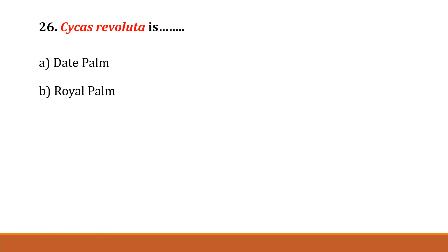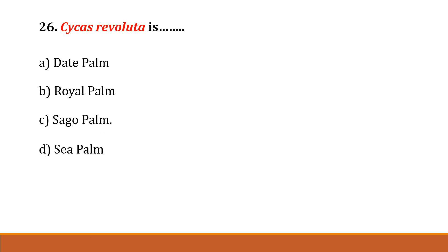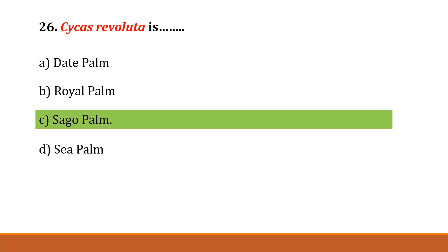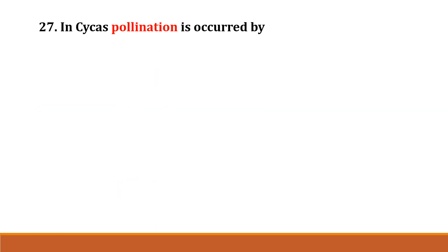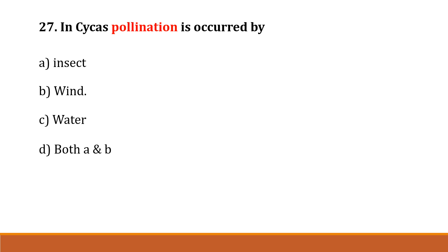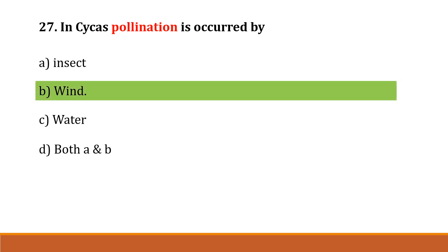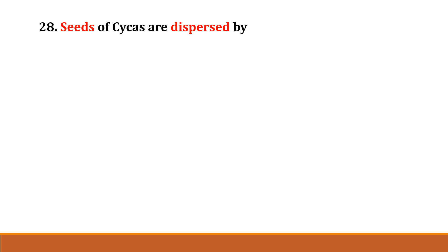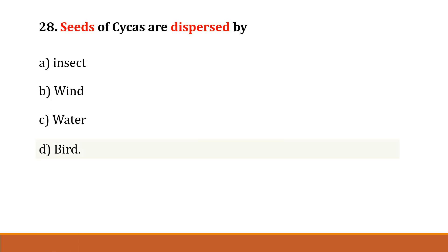Question number 26: Cycas revoluta is Option A: dead palm, Option B: royal palm, Option C: sago palm, Option D: sheep up. The correct answer is Option C, sago palm. Question number 27: In Cycas, pollination is occurred by Option A: insect, Option B: wind, Option C: water, Option D: both A and B. The correct answer is Option B, wind. Question number 28: Seeds of Cycas are dispersed by Option A: insect, Option B: wind, Option C: water, Option D: bud. The correct answer is Option D, bud.